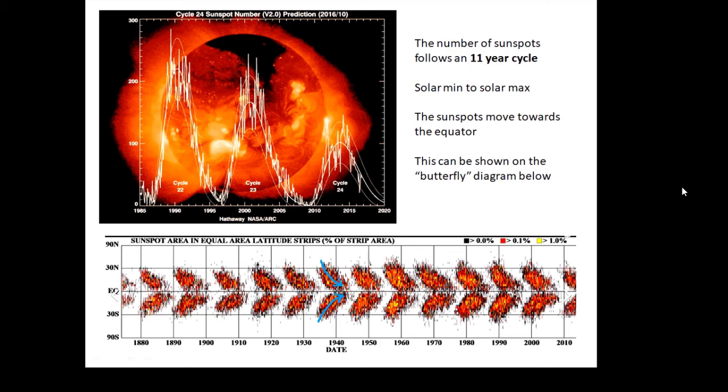There's a diagram which has come up on the GCSE exam a couple of times called a butterfly diagram, and that represents the number of sunspots over time. So as time goes by from left to right on the diagram, the number of sunspots gets bigger and then it gets smaller and they move towards the equator, and it's an 11 year cycle.